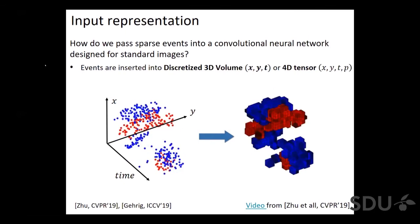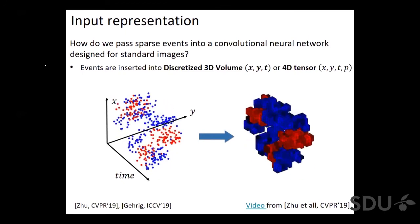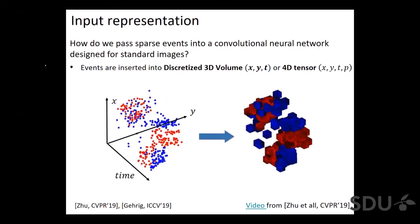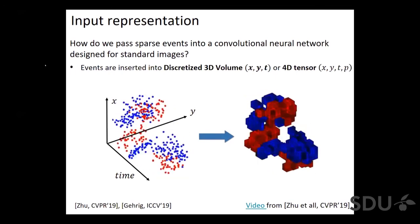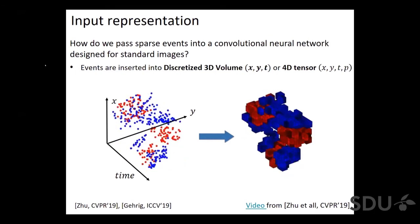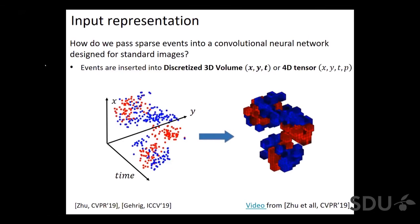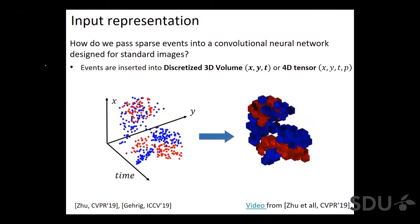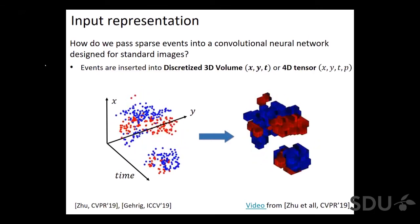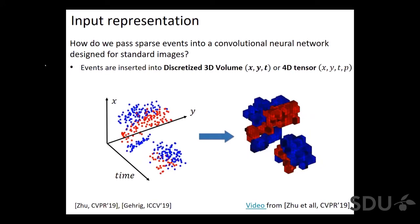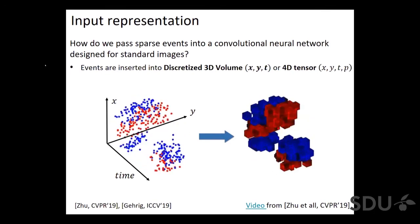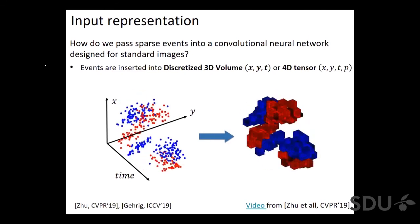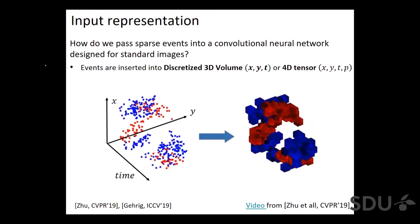The key question for using synchronous dense networks with event cameras is: what is the appropriate input representation? How do we pass sparse events into a convolutional neural network designed for standard images? The idea is to aggregate sparse events into volumes — voxels where in each voxel you sum up the number of positive or negative events. You can insert the events into discretized 3D volumes or four-dimensional tensors, in case you also want to take into account polarity.